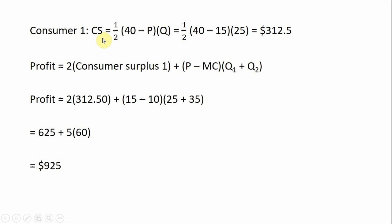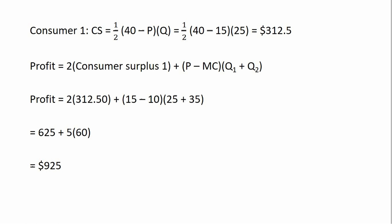Calculating consumer one's consumer surplus at a price of $15: one-half times (40 minus 15) times 25 equals $312.50. Since there are two consumers, each consumer's access fee will be $312.50. Plugging this into the profit function: 2 times $312.50 plus (15 minus 10) times 60 total units gives a profit of $925. That is how you solve a two-part tariff problem when consumers have different demands.